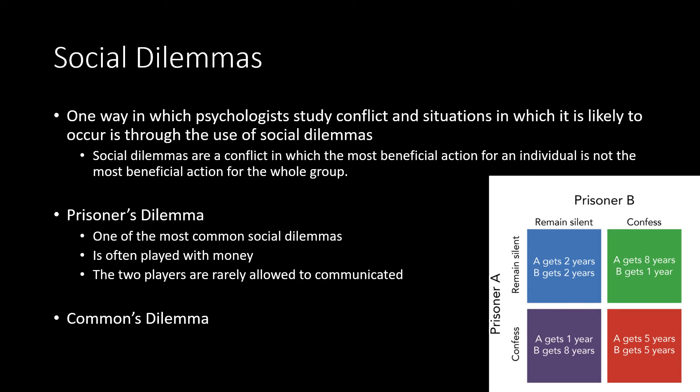One of the most common ways in which psychologists study conflict is through the use of social dilemmas. A social dilemma is a situation in which actions that are most beneficial to a singular individual are oftentimes not the most beneficial to the whole group, and actions most beneficial to the group do not maximize individual gain.